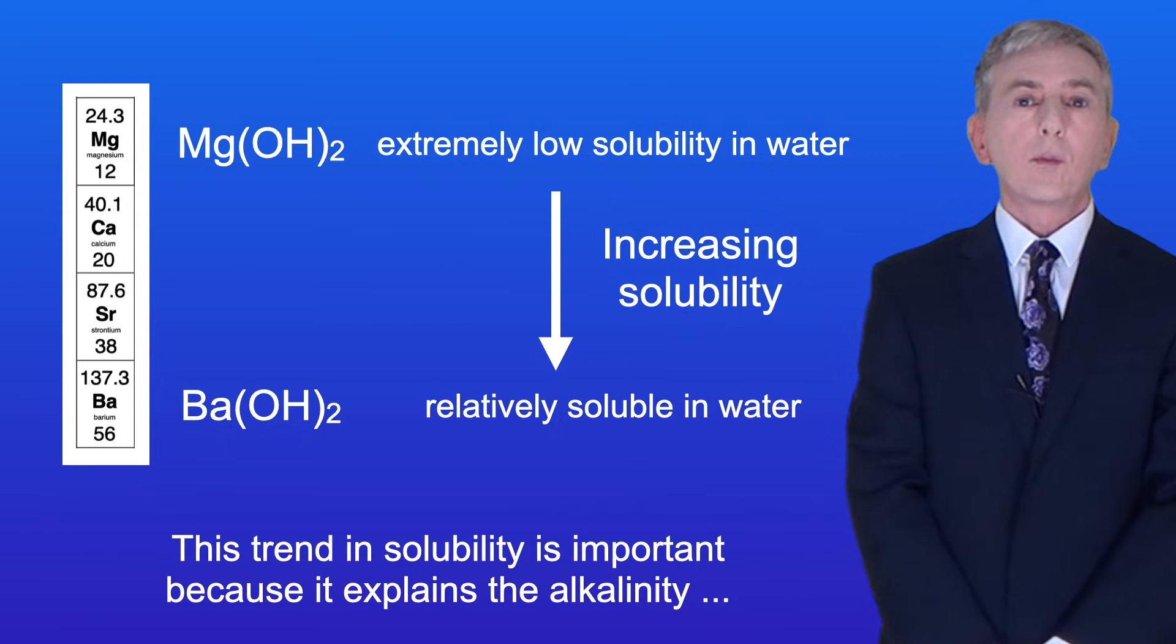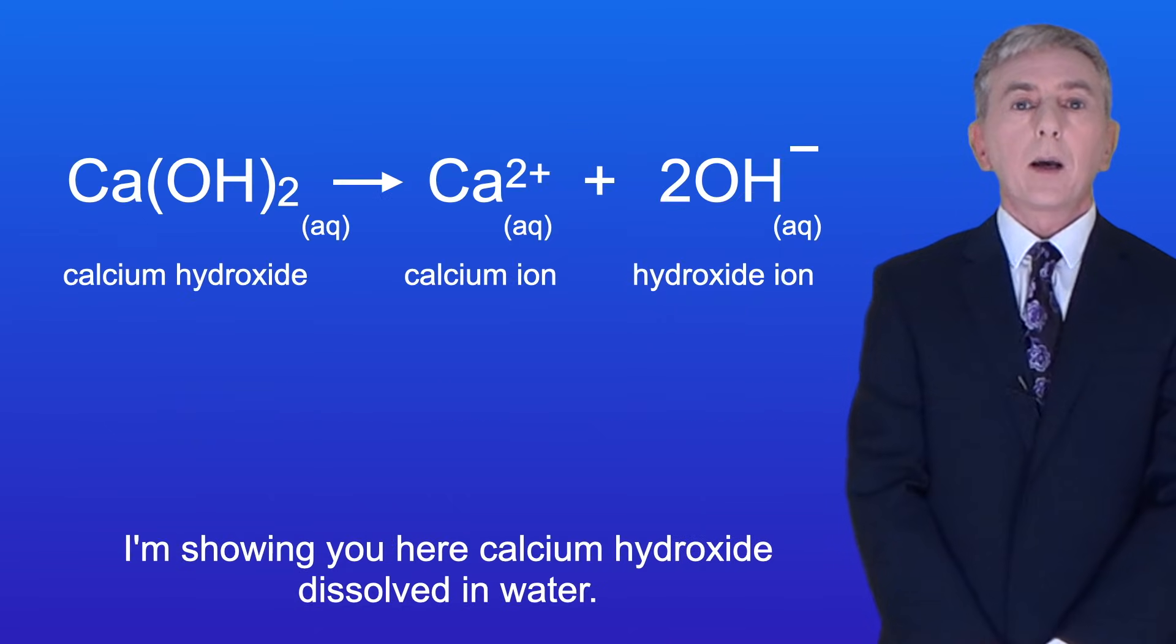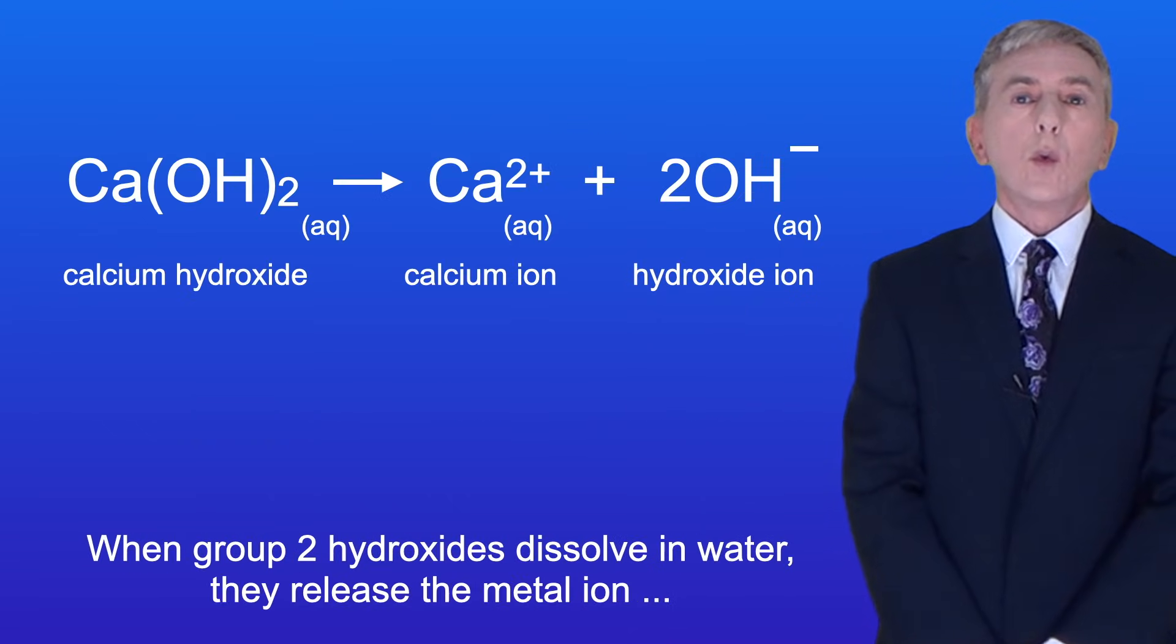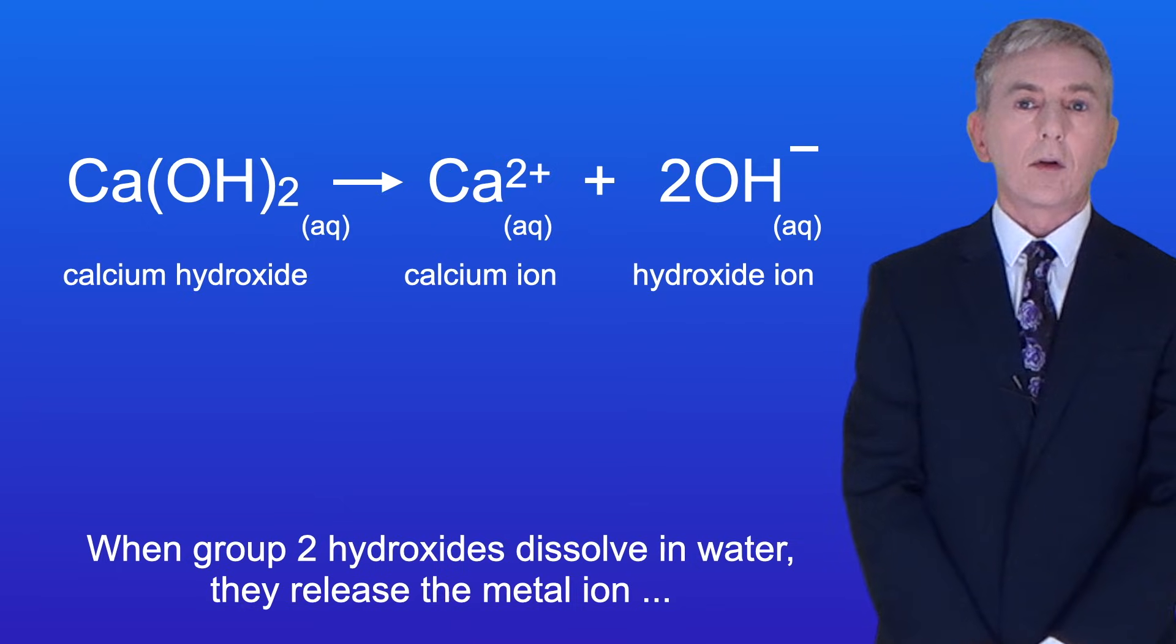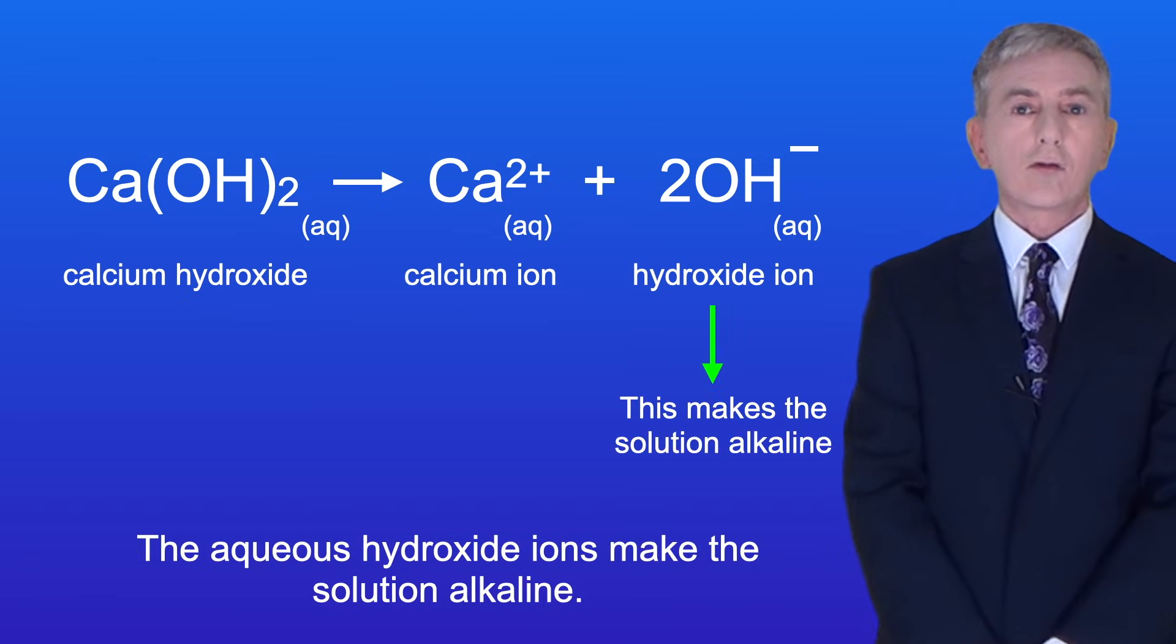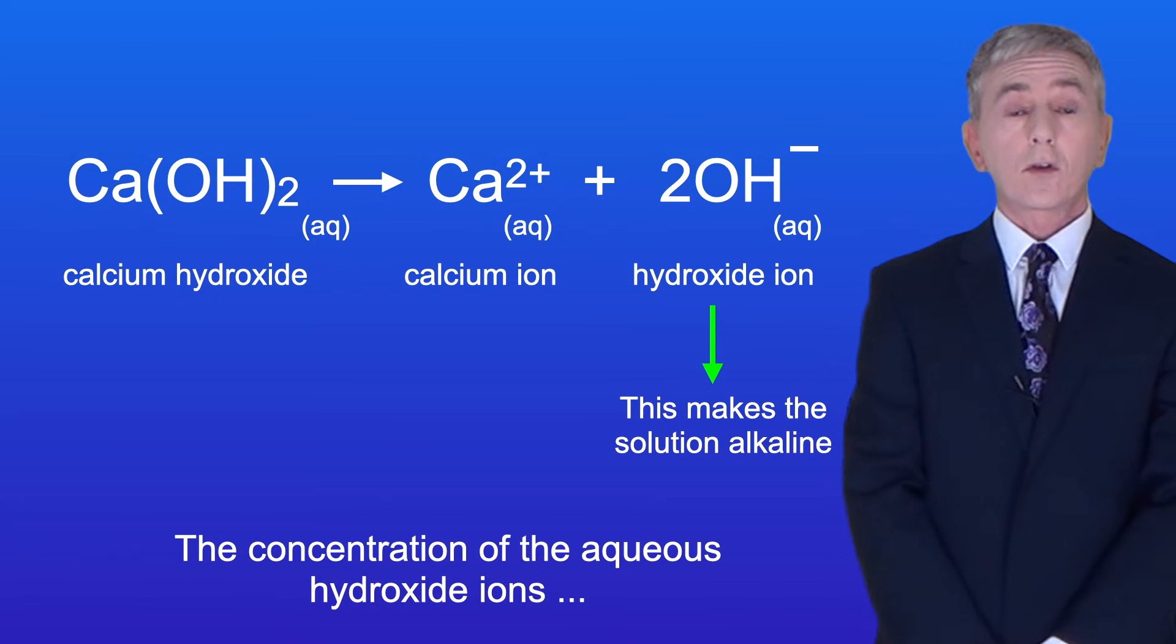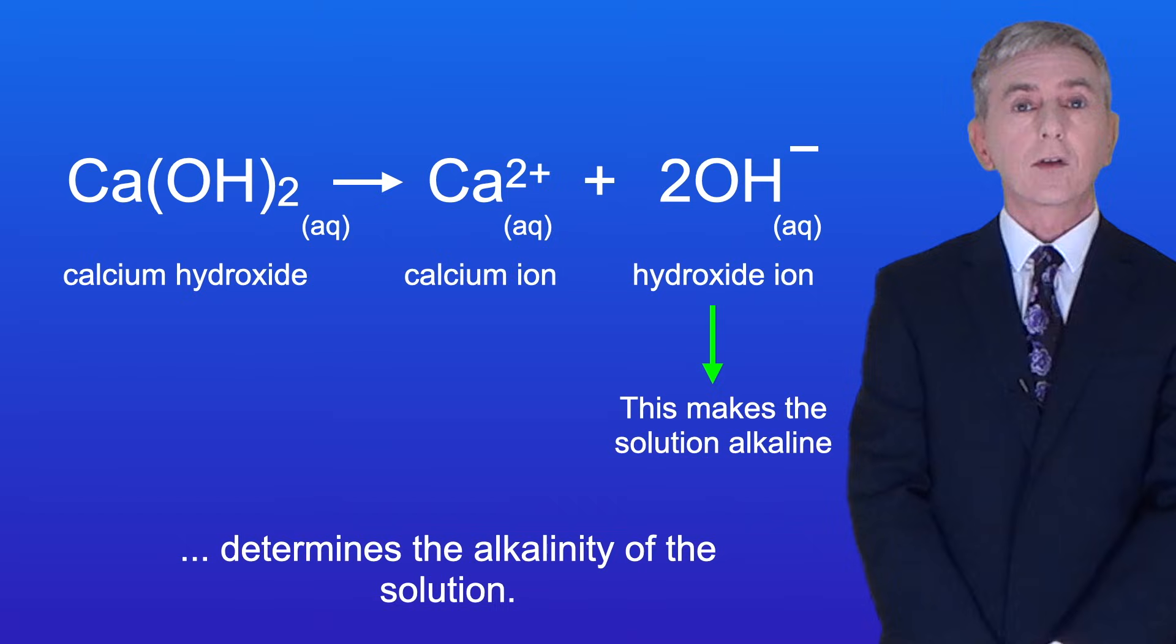This trend in solubility is important because it explains the alkalinity of the group 2 hydroxides. I'm showing you here calcium hydroxide dissolved in water. When group 2 hydroxides dissolve in water, they release the metal ion and two hydroxide ions. The aqueous hydroxide ions make the solution alkaline, and the concentration of the aqueous hydroxide ions determines the alkalinity of the solution.